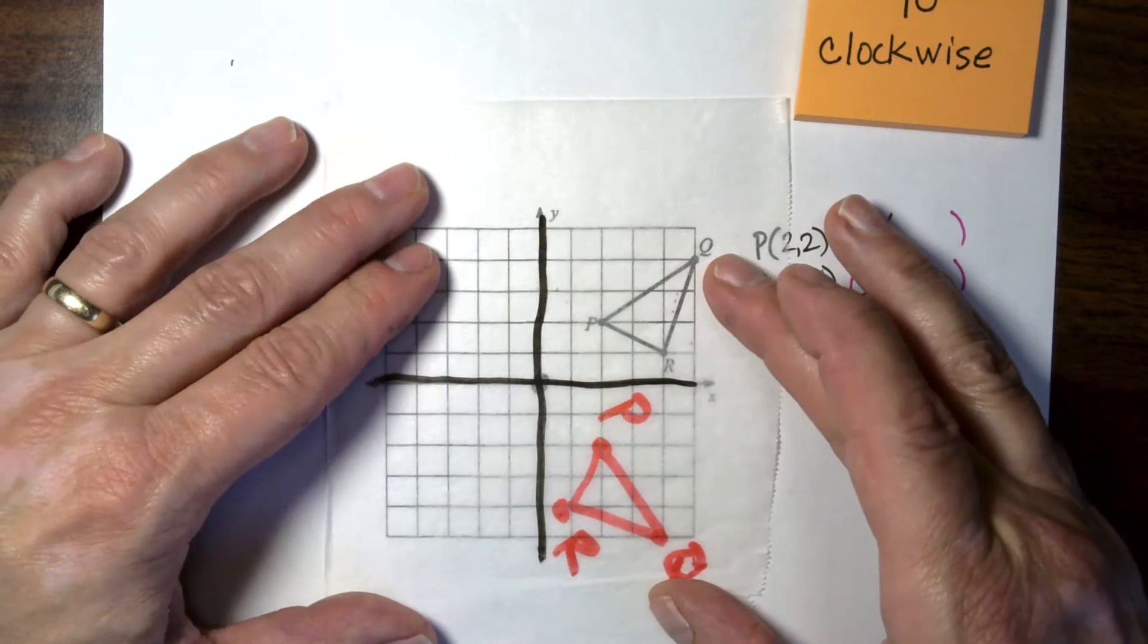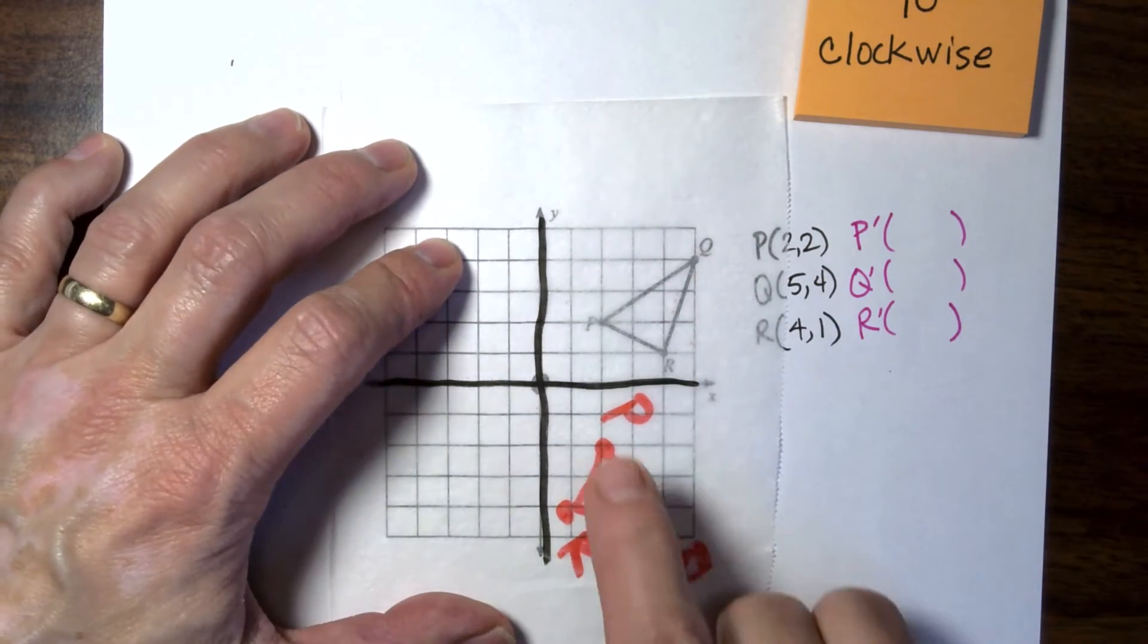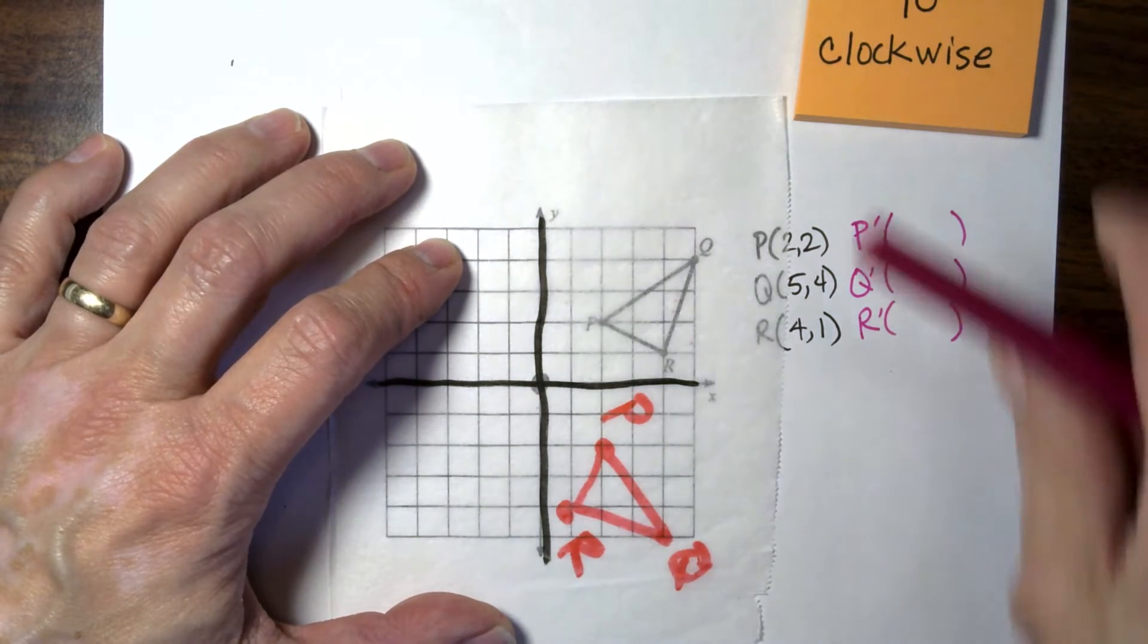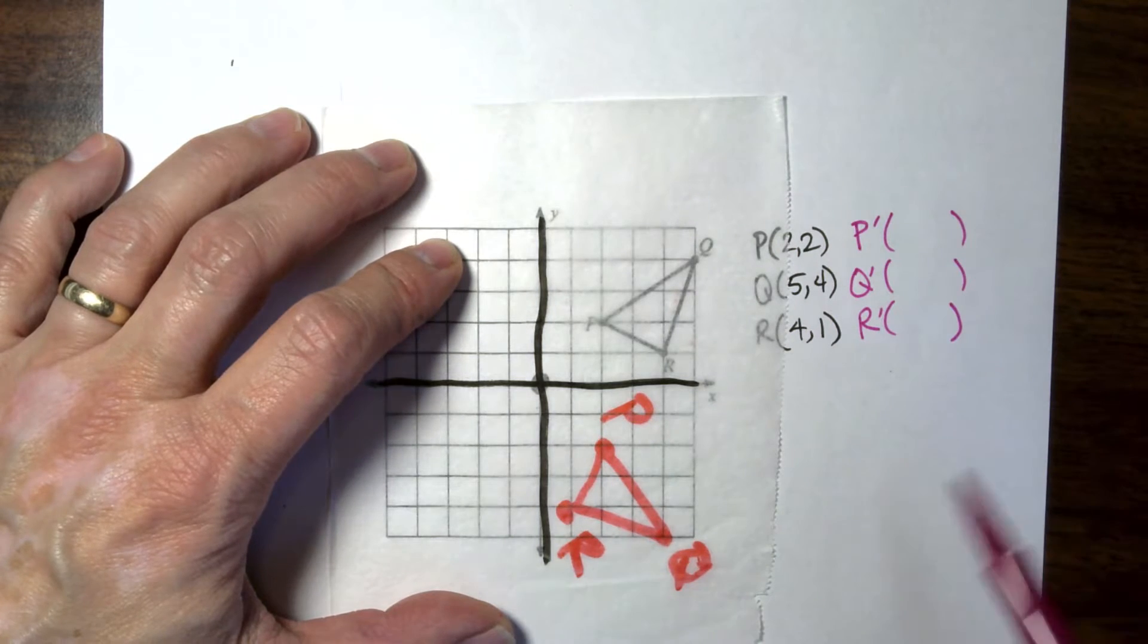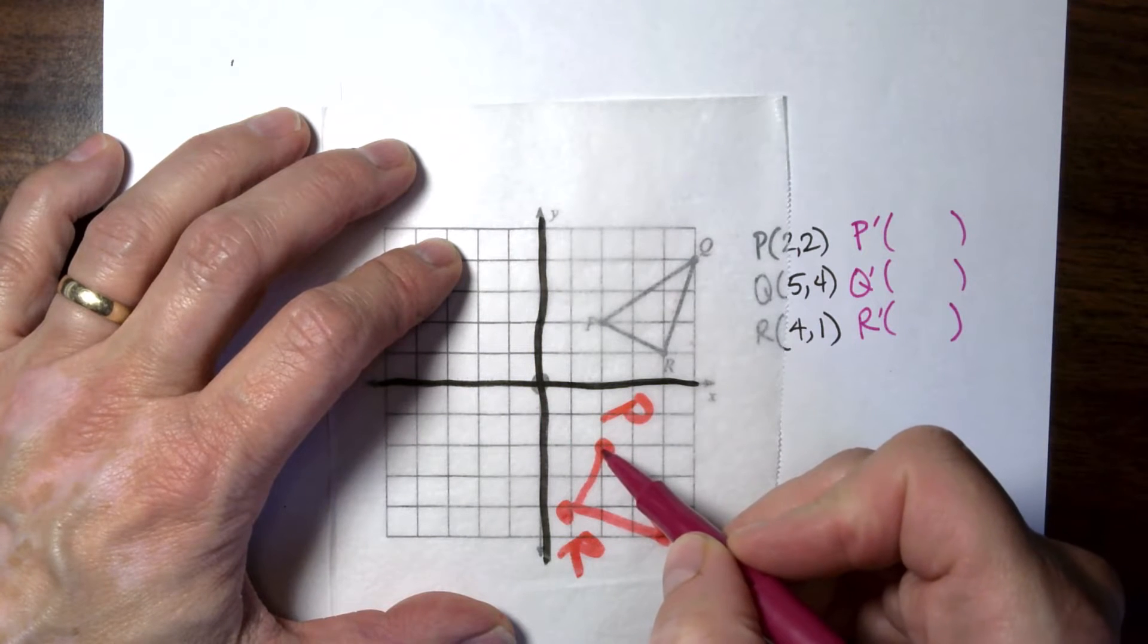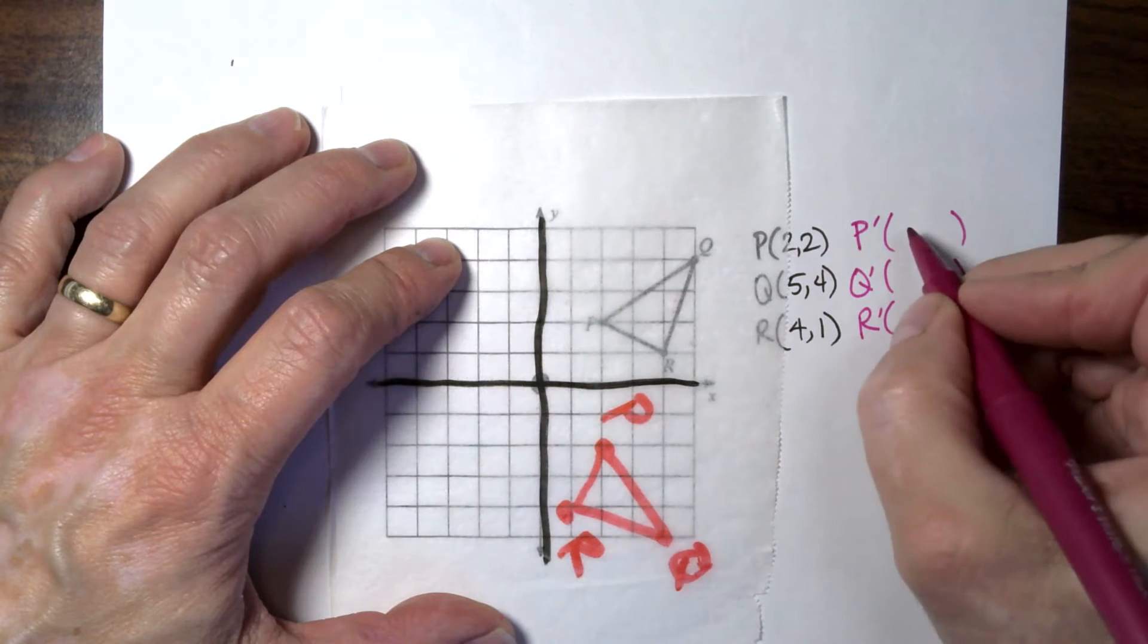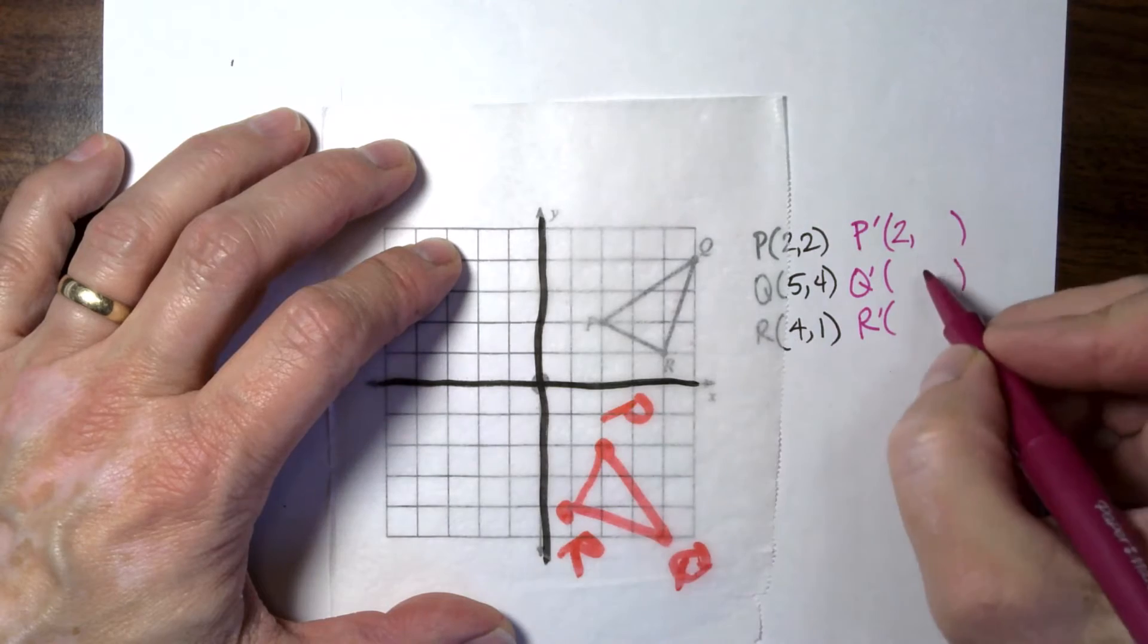And that's where the new points line up. Now, I didn't do the most perfect job of drawing, but you can still figure out where those points would be. So for this one, P prime would be the new P, which is right here.